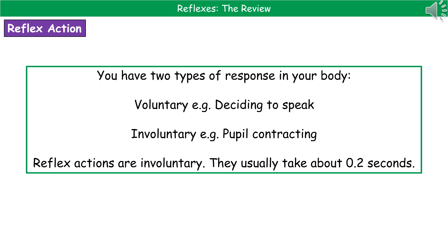Welcome to our review on reflexes. When we're considering what's happening inside our body, we have two types of response that could occur. The first one is the voluntary response, where you make that conscious decision to do something — for example, deciding to have a conversation with your friends in class. Then we've got the involuntary ones, which are the ones you don't consciously think about, but they occur anyway.